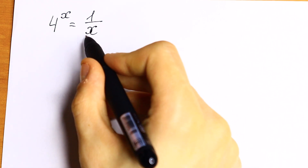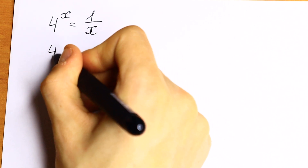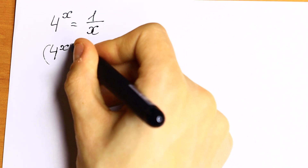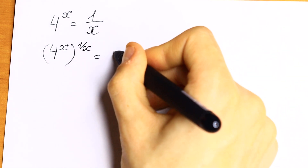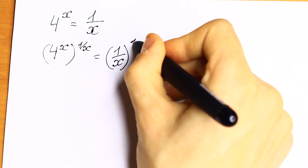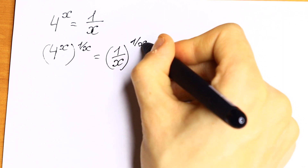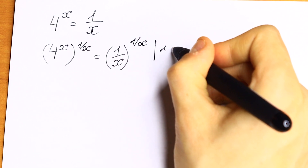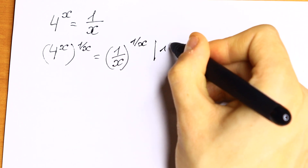Take a look. If we raise both sides to the power 1 over x, we will have 4 to the power x, raised to the power 1 over x, equal to 1 over x raised to the power 1 over x. So we just raise both sides to the power 1 over x.